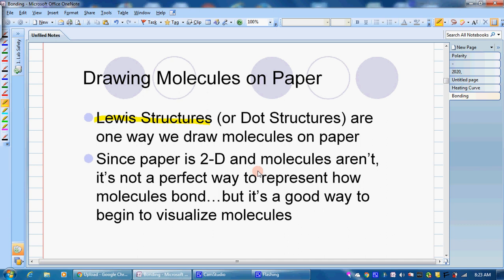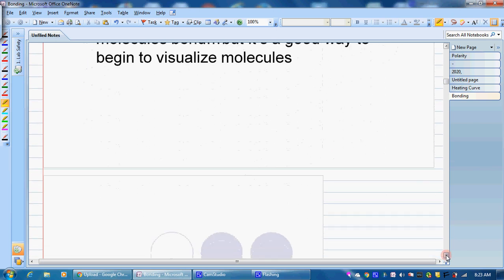This will show you where the bonds are located. So again, we go back to those Lewis dot structures. We're going to write in exactly how many valence electrons there are. But remember, these are going to be two-dimensional, so it basically shows you how they bond together but not exactly where they're at.